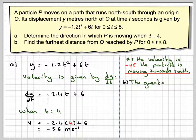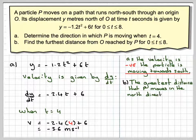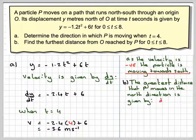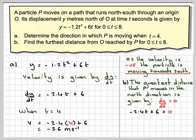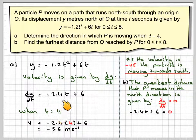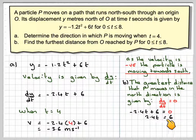The greatest distance that P moves in the north direction is going to be given by dy/dt = 0, because as it goes up and stops, and then comes back down again, the velocity will be 0. So we can find that point by finding the velocity equal to 0. Take the velocity, -2.4t + 6, and put it equal to 0. Then rearrange: 2.4t = 6. t will be equal to 6 divided by 2.4, which is 2.5 seconds.